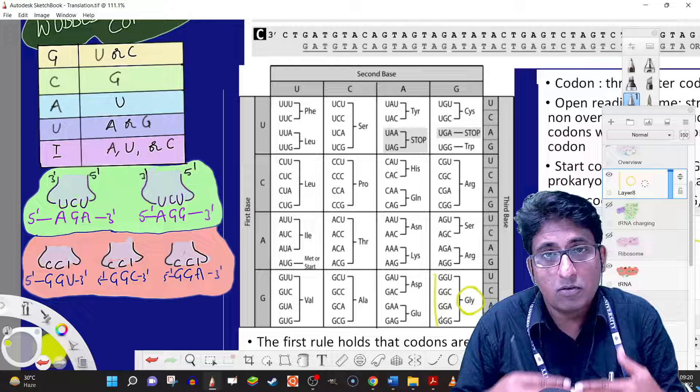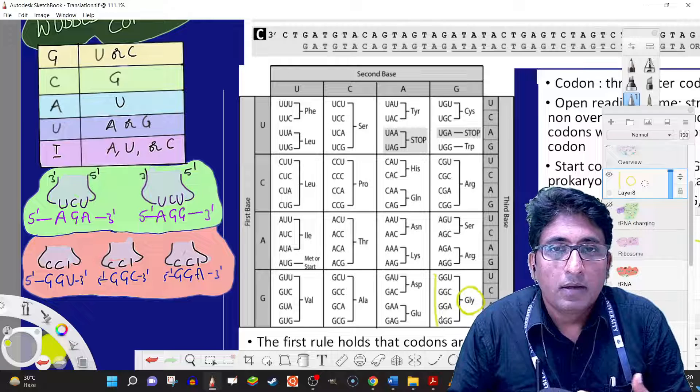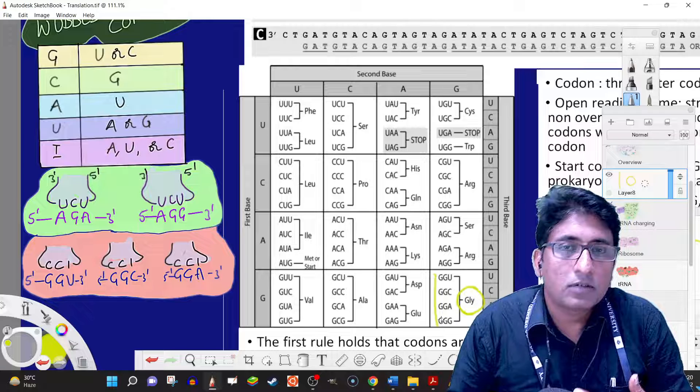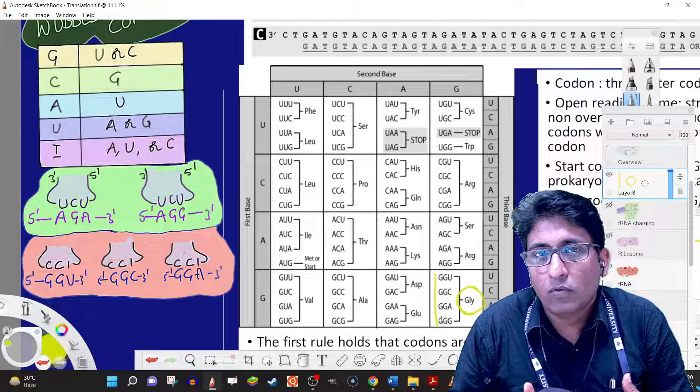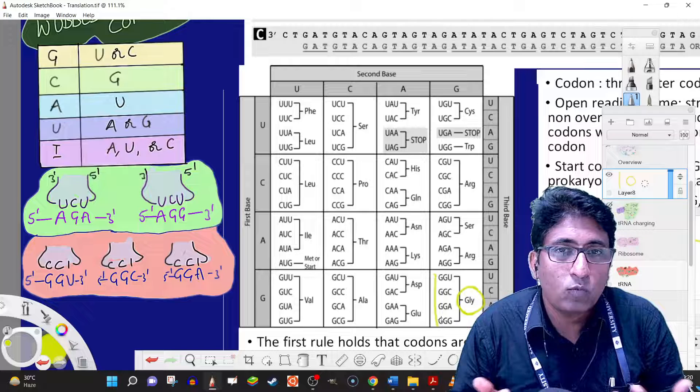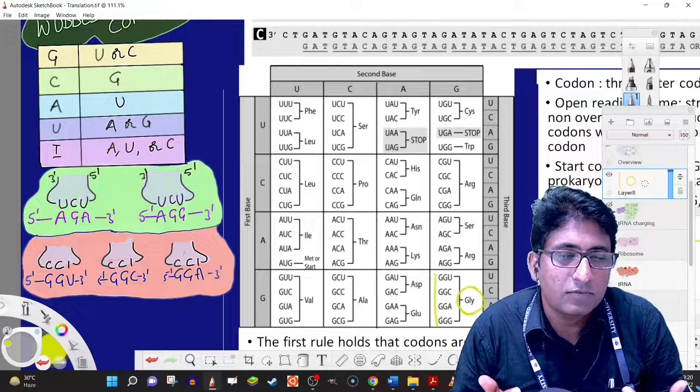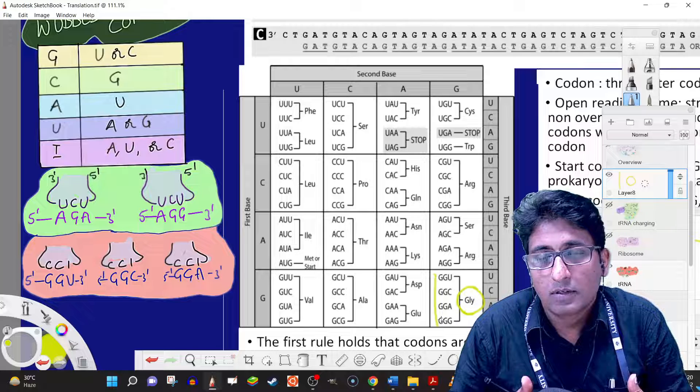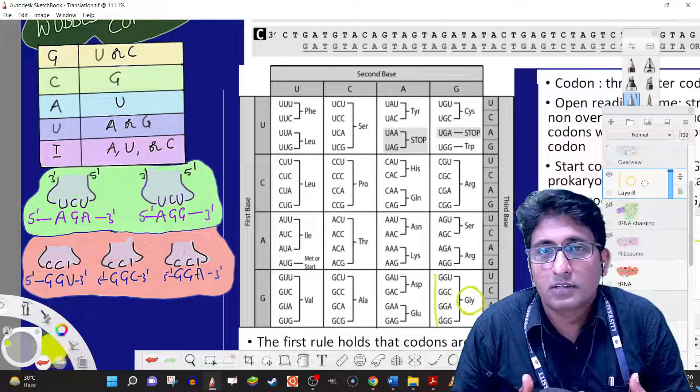Would you need four different tRNAs to recognize these four different codons? Should they have different anticodons? The wobble concept says we don't need four different tRNAs. Instead, one is sufficient, or less than four are sufficient.